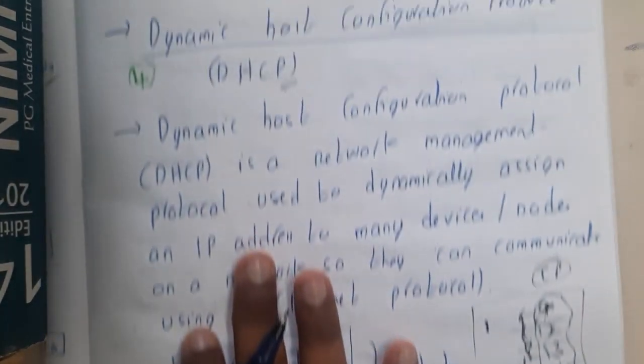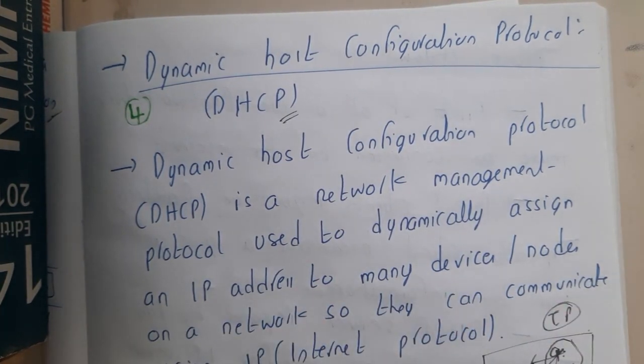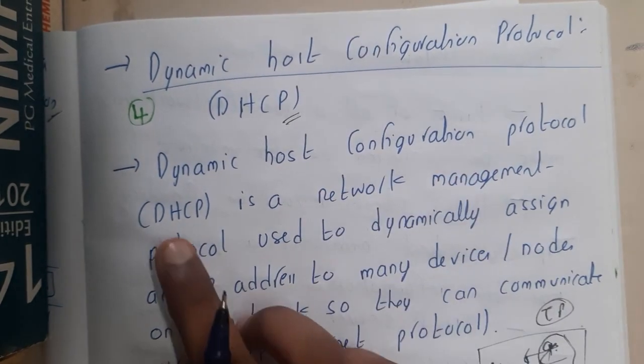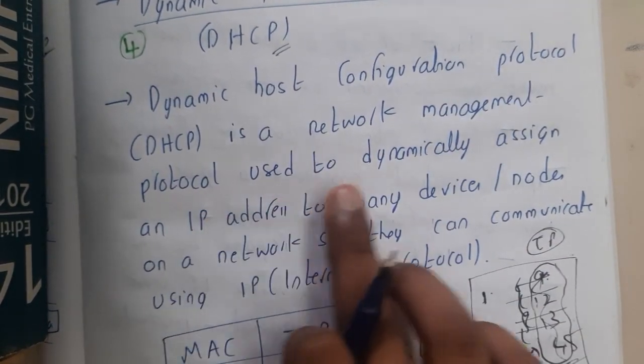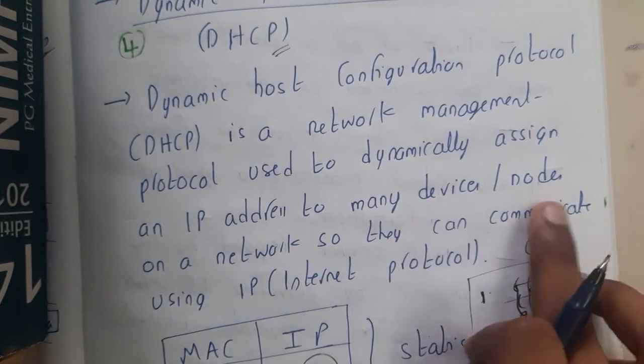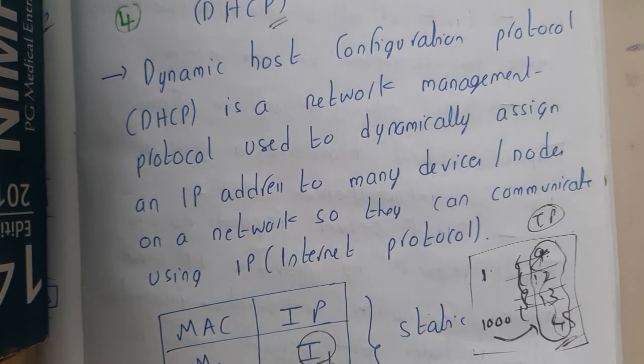Now let us go through the theory. Dynamic Host Configuration Protocol (DHCP) is a network management protocol used to dynamically assign an IP address to many devices or nodes on a network so they can communicate using these IP addresses.